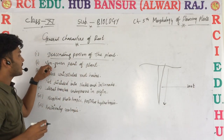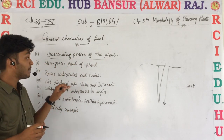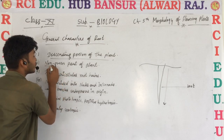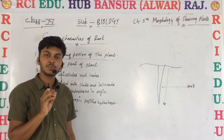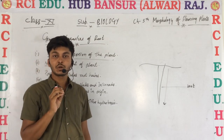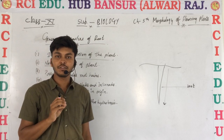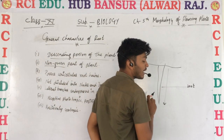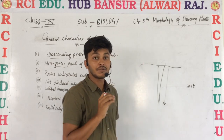The second characteristic: roots are the non-green part of the plant. These are basically non-green and non-photosynthetic. Chlorophyll is not available in roots, which is needed for synthesizing food. It means roots are not able to synthesize food.